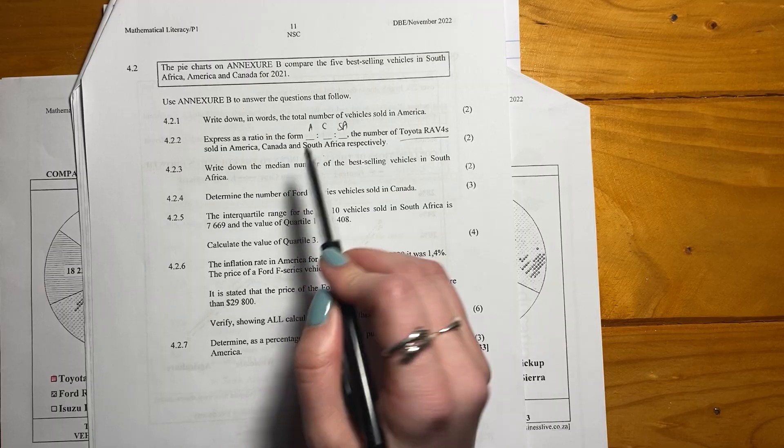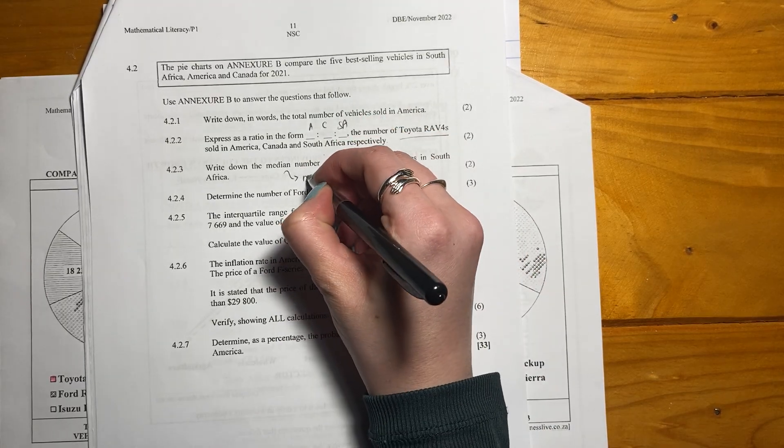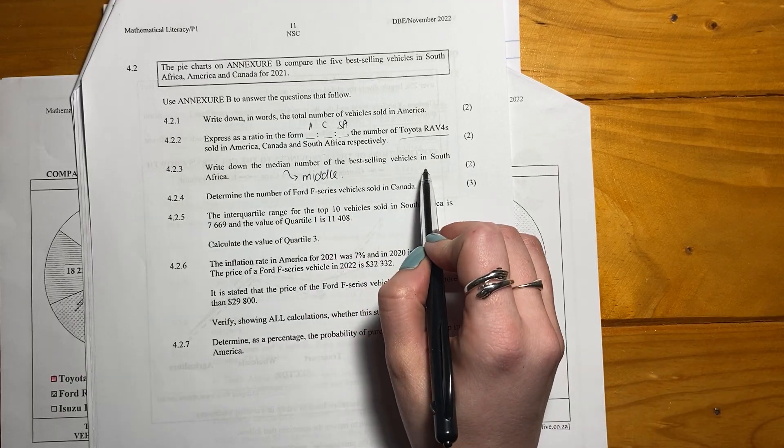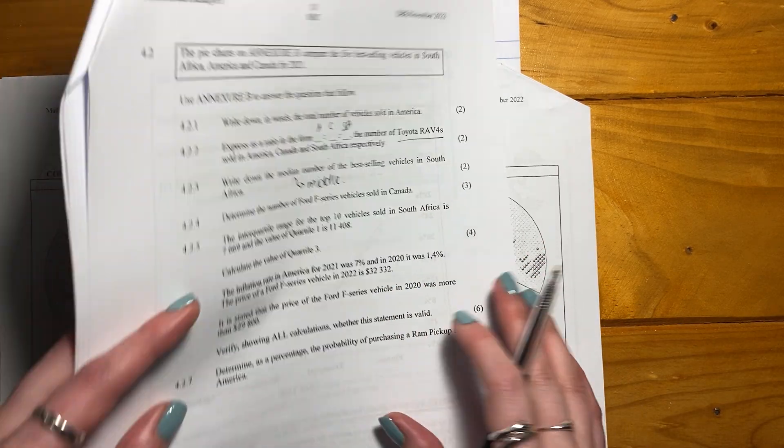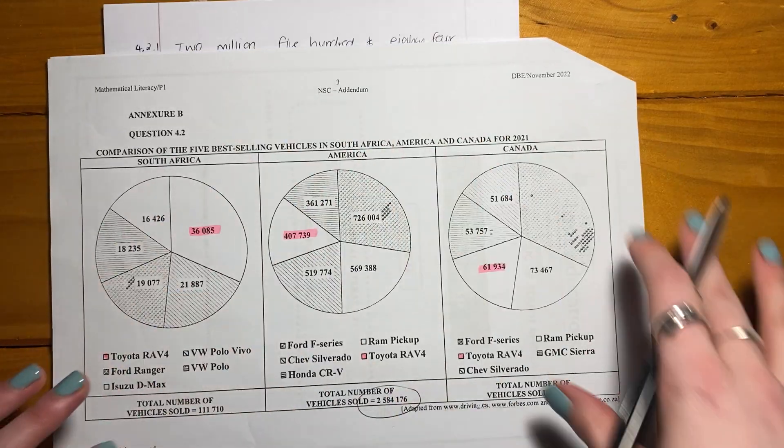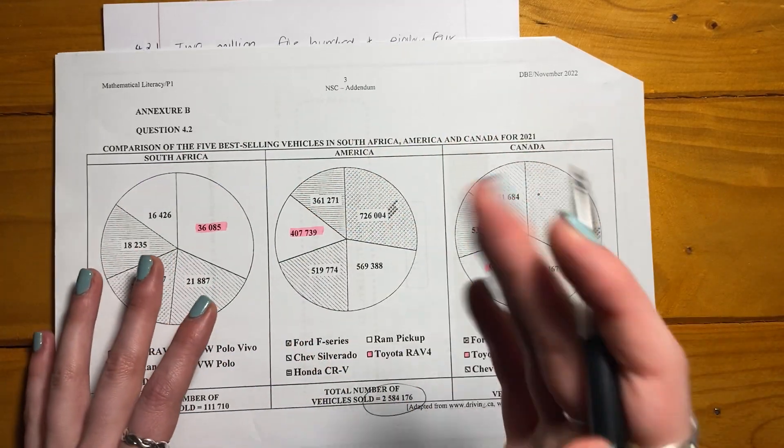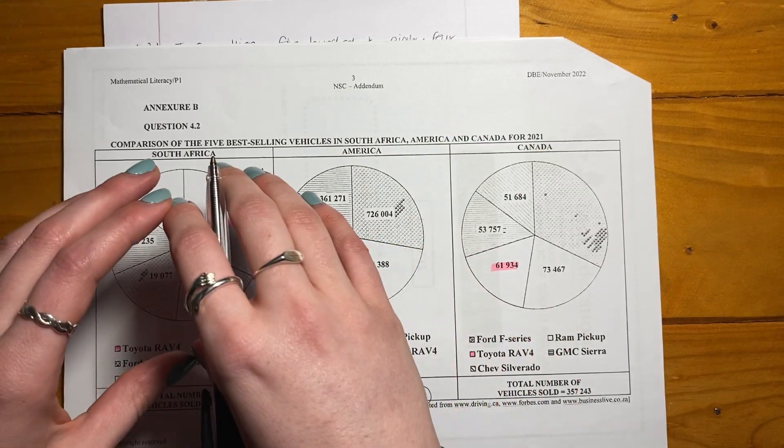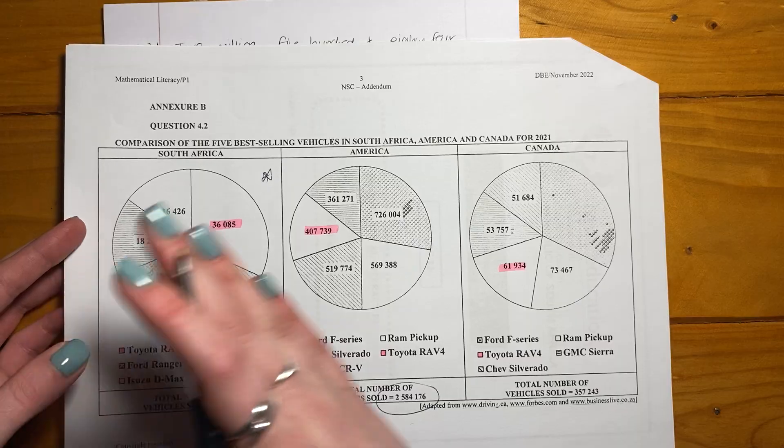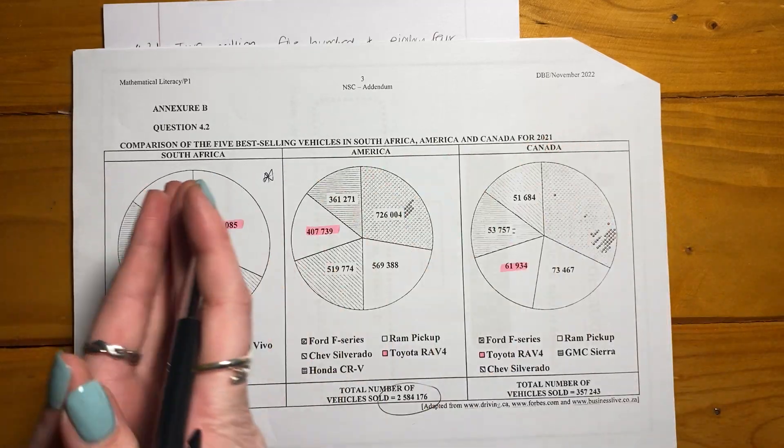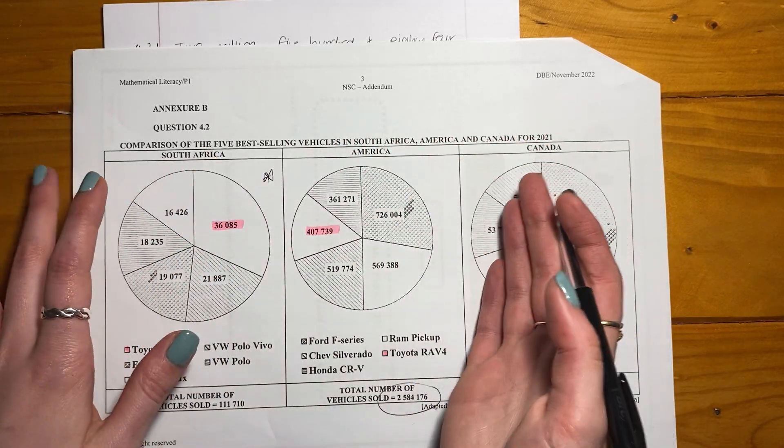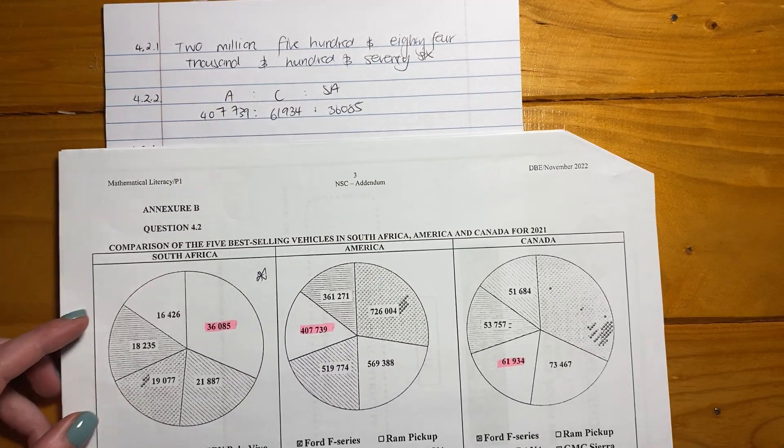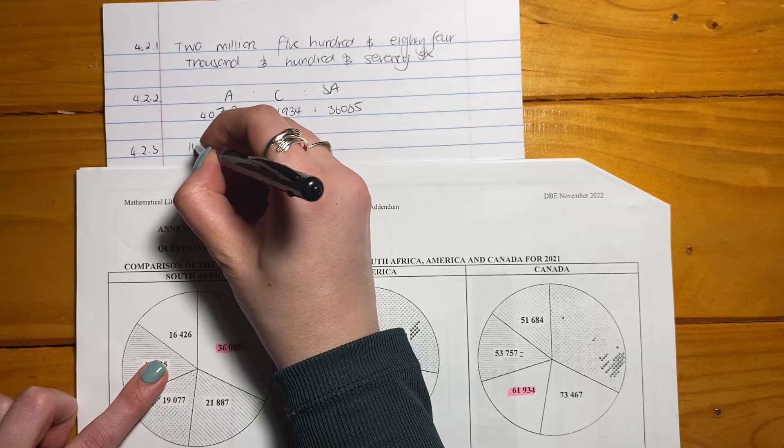4.2.3. Write down the median number of best-selling vehicles in South Africa. When we see the word median, we're always thinking in the middle. So now we're just looking at South Africa over here. When we're looking at the median, remember that we have to order our numbers. So we have to go from smallest to biggest, and the median is the middle number.